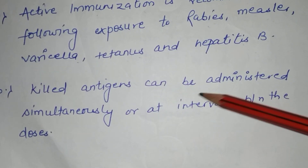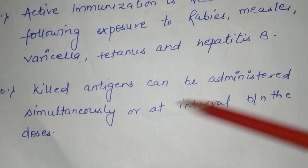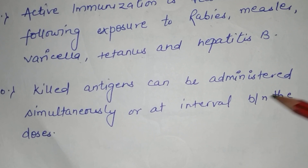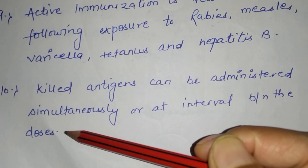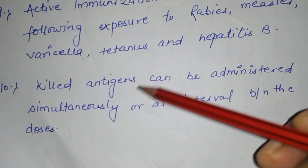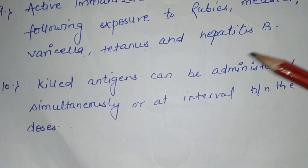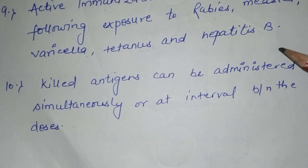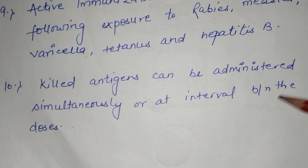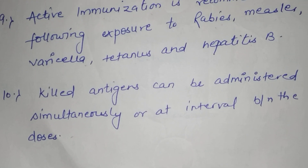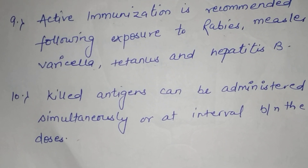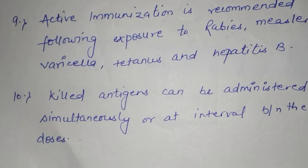Killed antigens can be administered simultaneously or at an interval between doses. So killed vaccines can be given together, but the sites should be different. In this video we discussed the principles of vaccination.